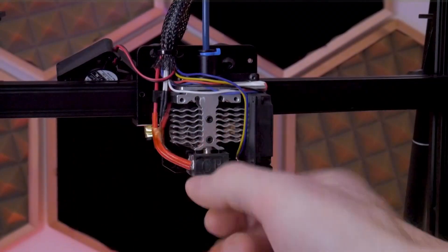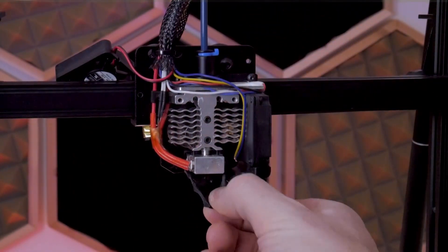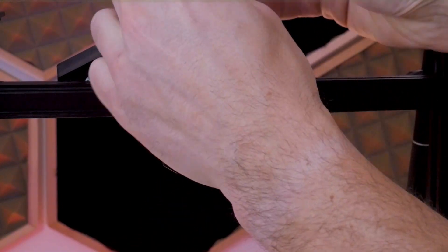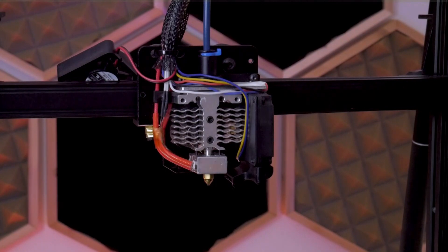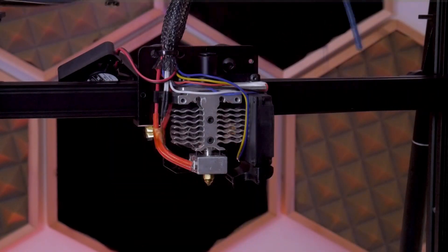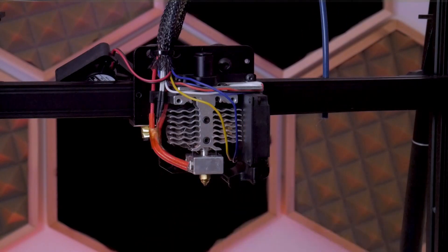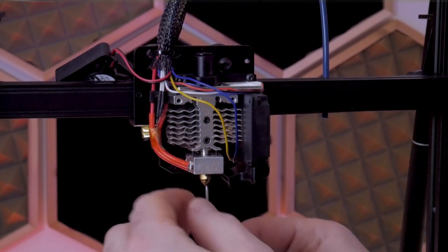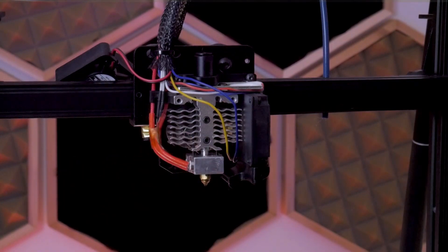Now you can work your way around the hot end removing things like the silicone sock, the cable ties, the clip that holds in your Bowden tube, and you can pull the Bowden tube out as well. After that, you can loosen the retaining screws for the heater cartridge and thermistor. Those are found on the bottom of the heating block, so you might have to get your head under there and find them.